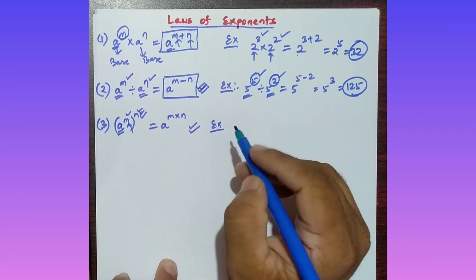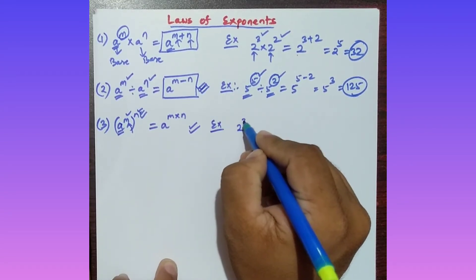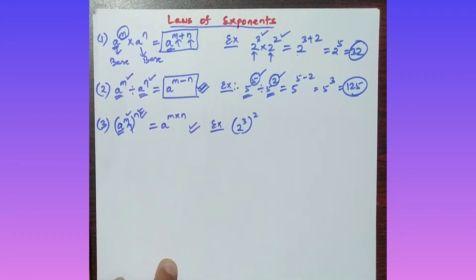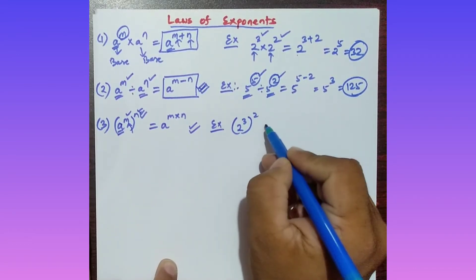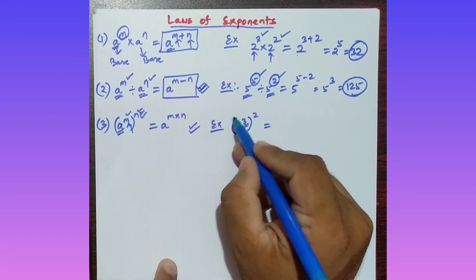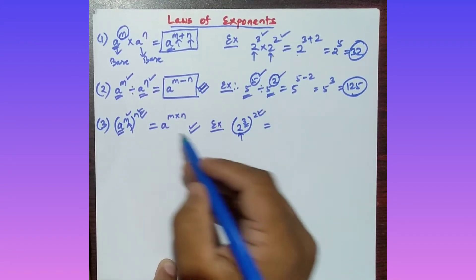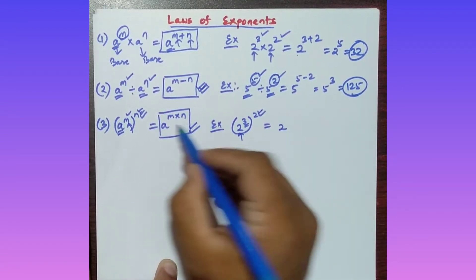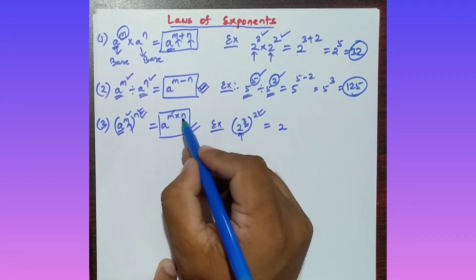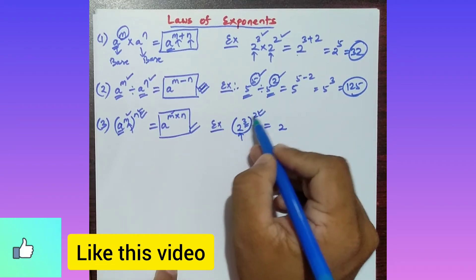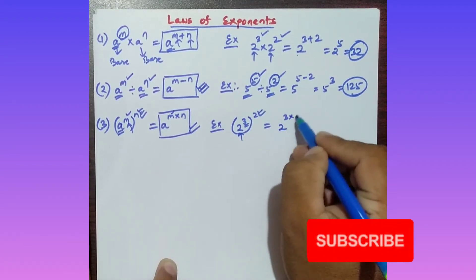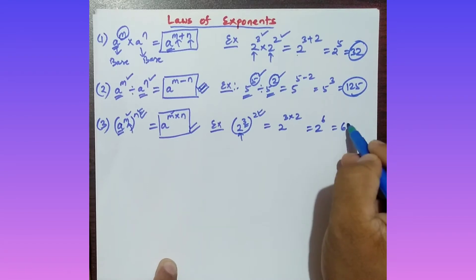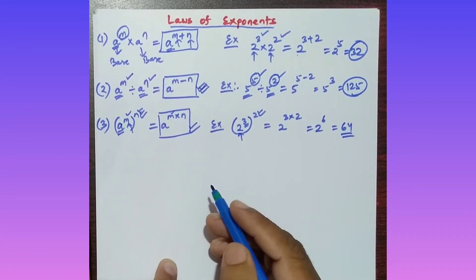Example for the third property: 2 to the power 3, whole to the power 2. Here 2 is the base, 3 is the power of the base, and 2 is the whole power. Applying the formula: 2 to the power 3 times 2, which is 2 to the power 6. And 2 to the power 6 equals 64. That is your answer.